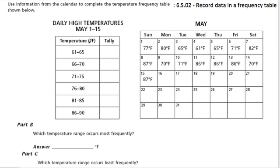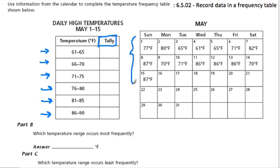Look at this table. The way it's set up is that each row is a different frequency range — so we have 61 to 65, then 66 to 70, and so forth. All we've got to do is tally or mark the number of times a temperature on this list occurs in these ranges.